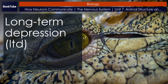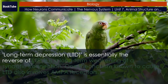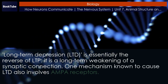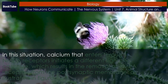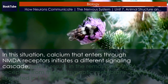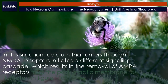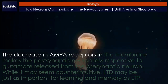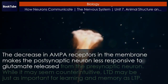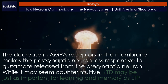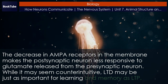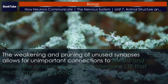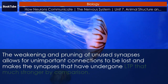Long-term depression (LTD) is essentially the reverse of LTP — it is a long-term weakening of a synaptic connection. One mechanism known to cause LTD also involves AMPA receptors. In this situation, calcium that enters through NMDA receptors initiates a different signaling cascade, which results in the removal of AMPA receptors from the postsynaptic membrane, as illustrated in Figure 10. The decrease in AMPA receptors in the membrane makes the postsynaptic neuron less responsive to glutamate released from the presynaptic neuron. While it may seem counterintuitive, LTD may be just as important for learning and memory as LTP. The weakening and pruning of unused synapses allows for unimportant connections to be lost and makes the synapses that have undergone LTP that much stronger by comparison.